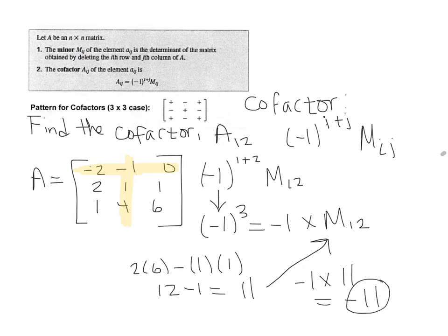So this right here, this negative 11, is the cofactor of all of this. So the cofactor of A1-2, which is what we were asked for in the beginning, is simply negative 11. So this is what they were looking for, and there's our answer.